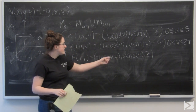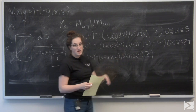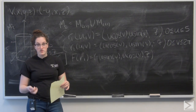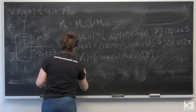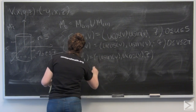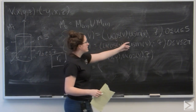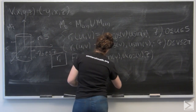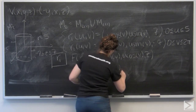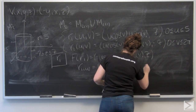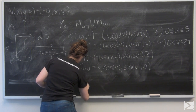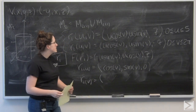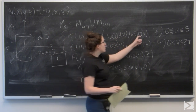That gives me negative U sine V, U cosine V, 7. Now I want to find R_U cross R_V. I'll differentiate each term with respect to U to get R_U = cosine V, sine V, 0. And for R_V, taking partial derivatives with respect to V, I get negative U sine V, U cosine V, 0.